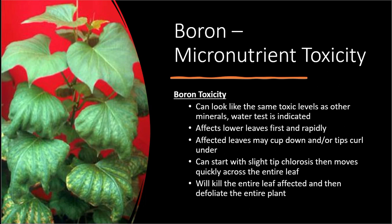Toxicity affects the lower leaves first, and rapidly — once it starts, it happens very quickly. Affected leaves may curl down and the tips curl under, almost like they're wilting, but they're actually drawing in on themselves. It starts with slight chlorosis and moves quickly across the entire leaf, killing it, then defoliating the entire plant from the bottom up until it reaches the very top.